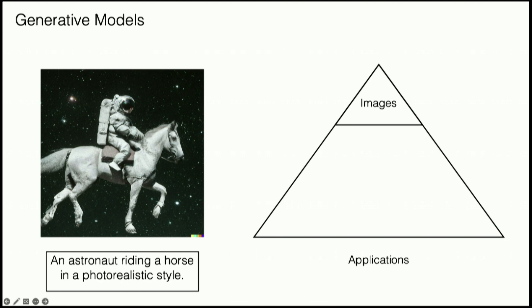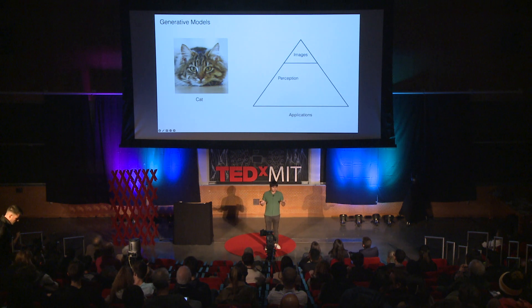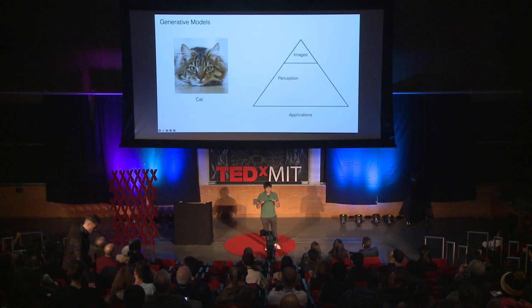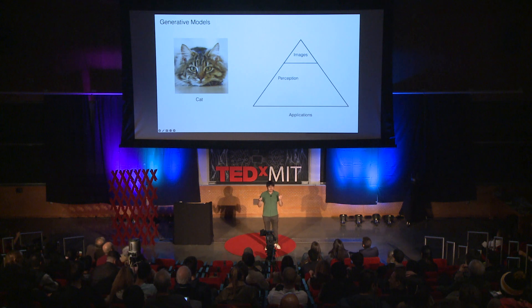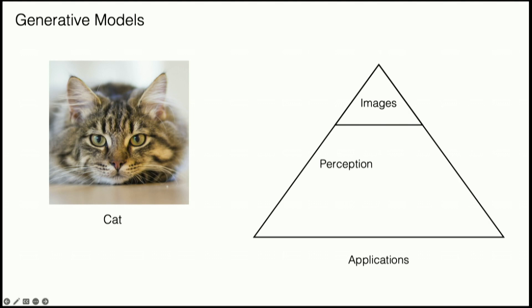Instead of just images, there are so many other possibilities that you could use generative models for, some of which I've been exploring. The first thing we can imagine is using generative models not just for generating art, but actually for understanding images. We can take an image of the real world, such as an image of a cat, and try to infer the text we can input into the generative model to generate the image we want. You can do all types of different images and really understand what is going on in the visual world.